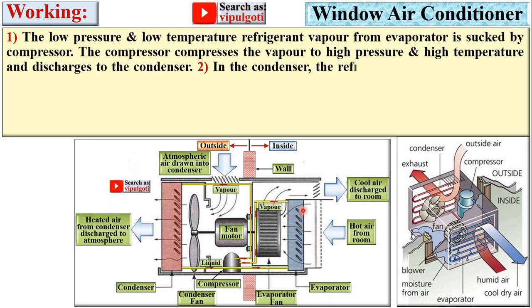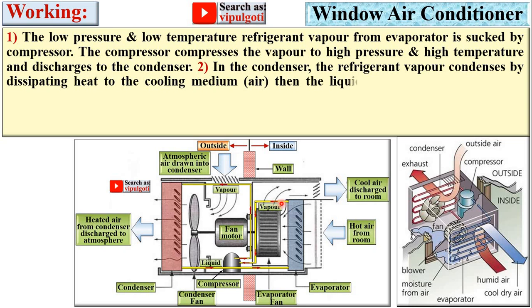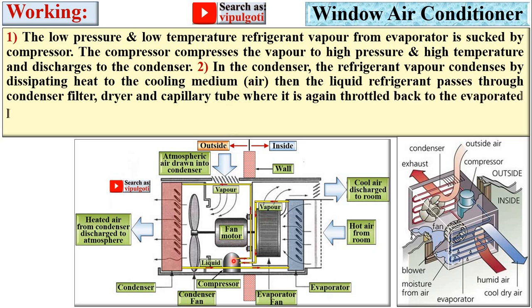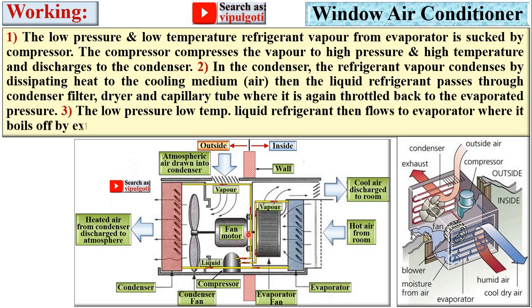And a low pressure and a low temperature vapor from the evaporator is sucked by the compressor. The compressor compresses the vapor to high pressure and high temperature and discharges to the condenser. So here you can see this one is the condenser.